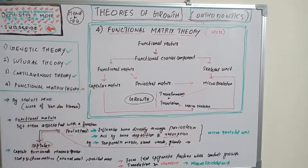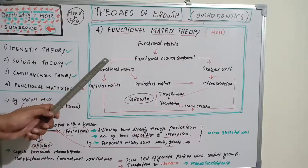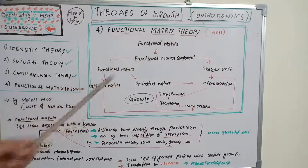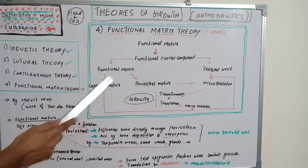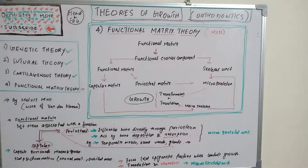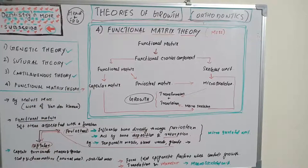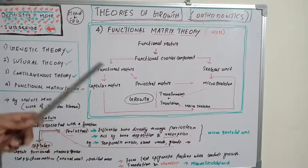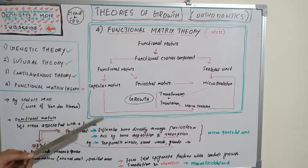The functional cranial component has two parts: the functional matrix, which performs the functional duty of a bone, and the skeletal unit, which provides biomechanical protection and support. Periosteal matrices influence bone directly through deposition and resorption; examples include temporalis muscle, teeth, blood vessels, nerves, and glands. Periosteal matrices form local environmental factors affecting microskeletal units — just a part of bone.